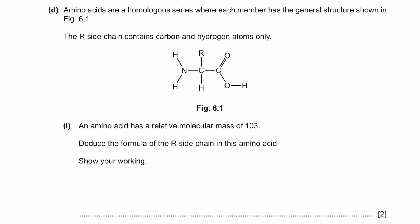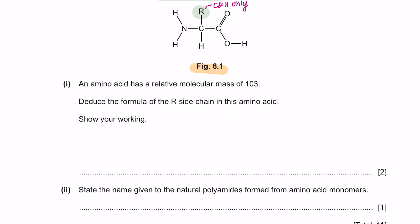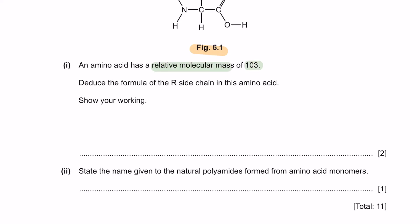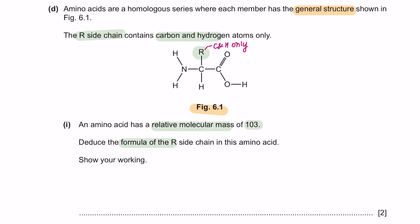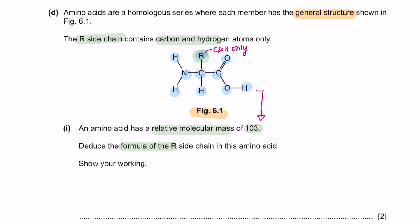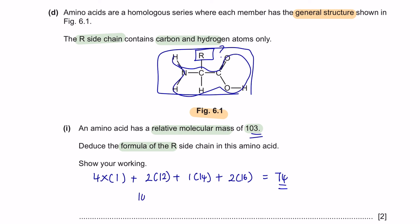Next question D. Amino acids are a homologous series where each member has the general structure shown in figure 6.1. The R-side chain contains carbon and hydrogen atoms only. Part 1: An amino acid has a relative molecular mass of 103. Deduce the formula of the R-side chain in this amino acid and show your working. The entire molecule has a mass of 103 and we are looking to find the mass of R. We can first add up all the masses that we already know. We have four hydrogens added with two carbons, one nitrogen, and two oxygens. The molecular mass for hydrogen is 1, for carbon is 12, for nitrogen is 14, and for oxygen is 16. This will give us 74. If the whole thing is 103 and we already calculated all this is 74, we're just going to take away 103 with 74 to get R, which is 29.